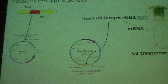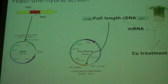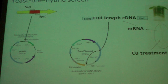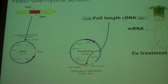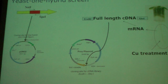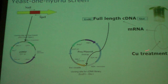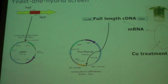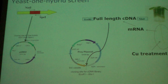It's important to use messenger RNA from a plant that has experienced copper excess because the transcription factor responsible for binding this promoter under copper excess may only be expressed under that condition. If we used mRNA from a control plant, we might never find it if the transcription factor isn't expressed there. Correct experimental design is essential.